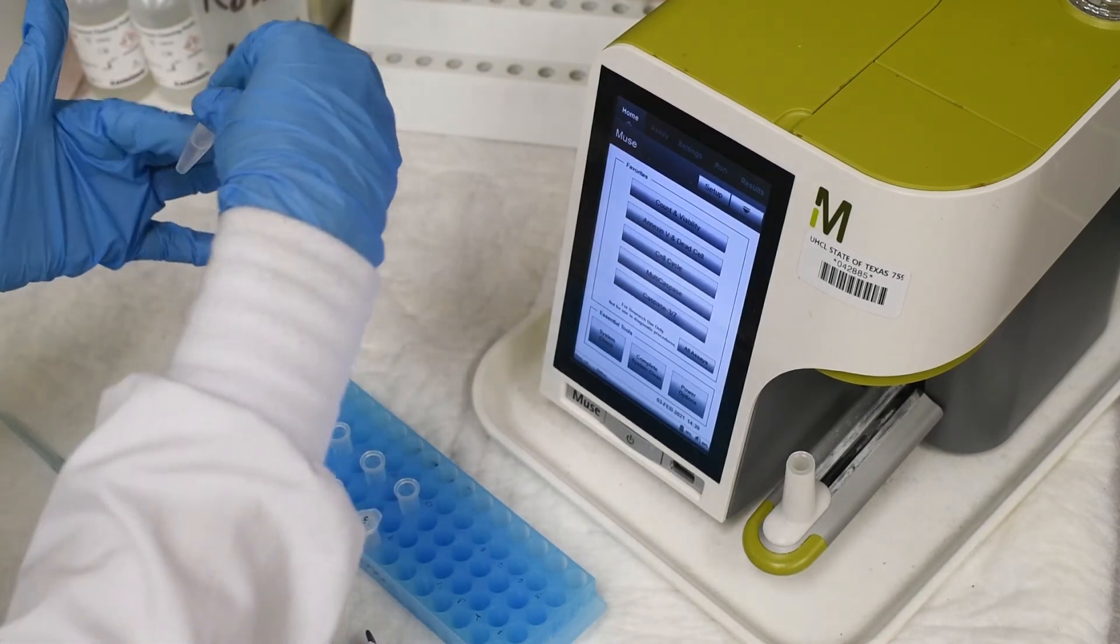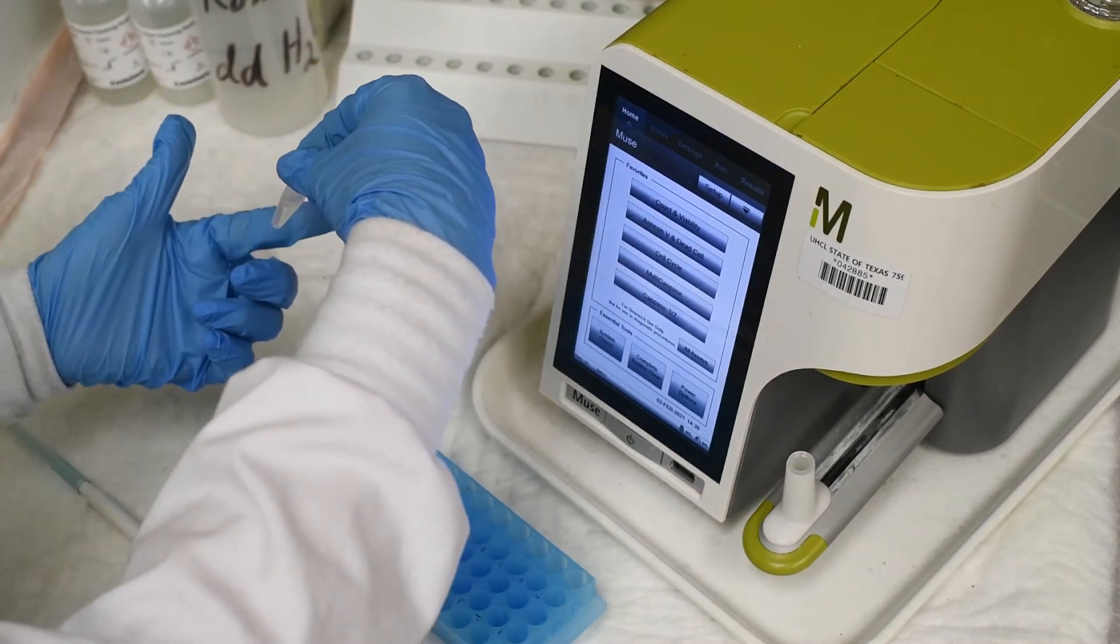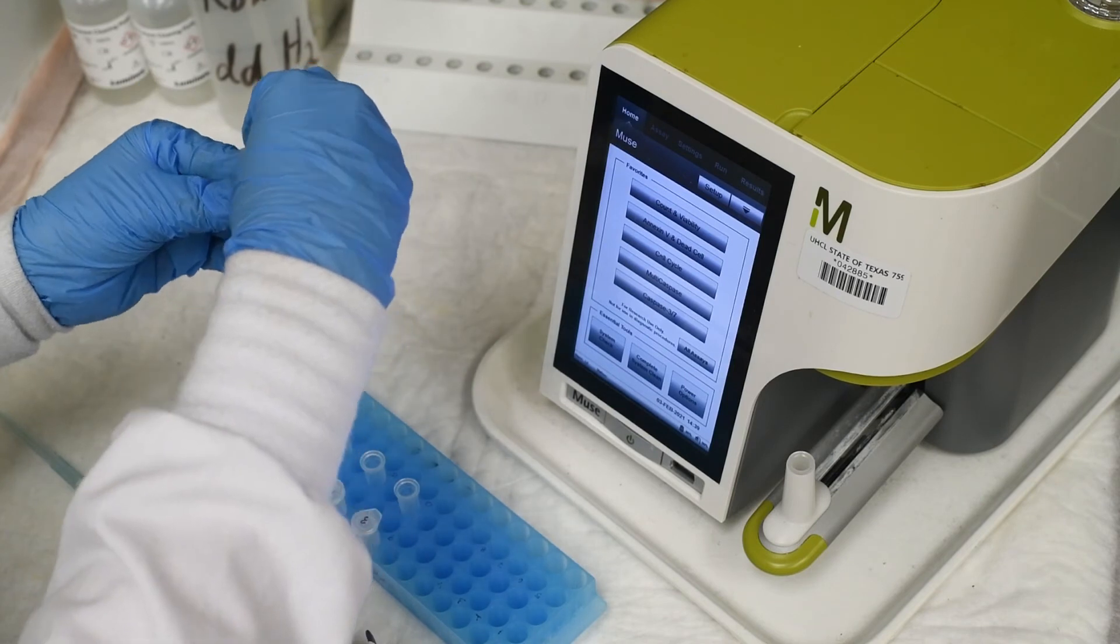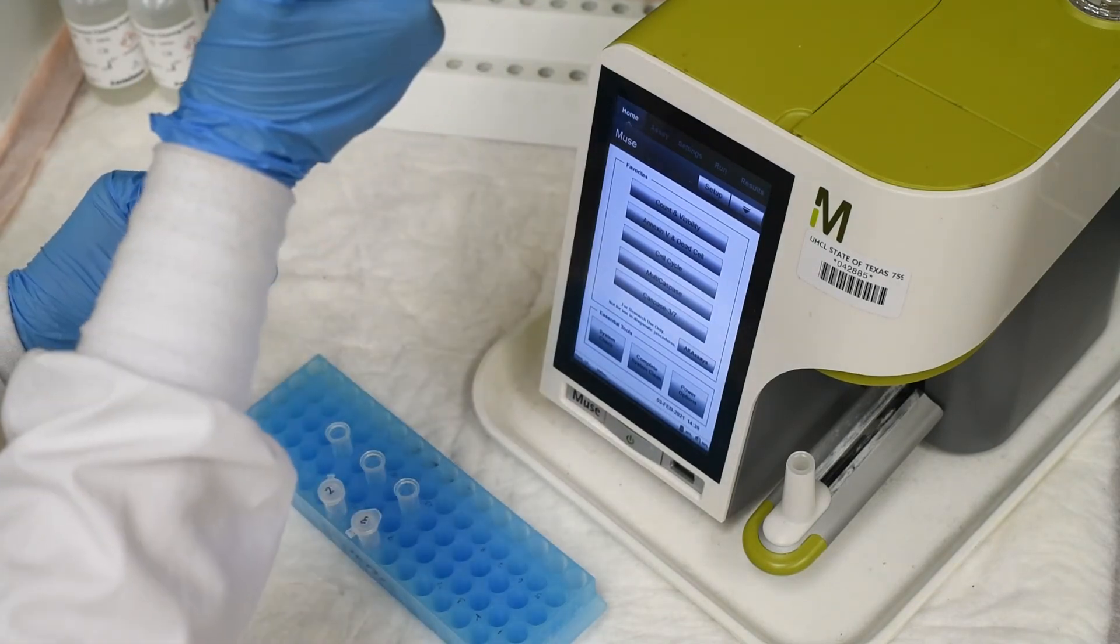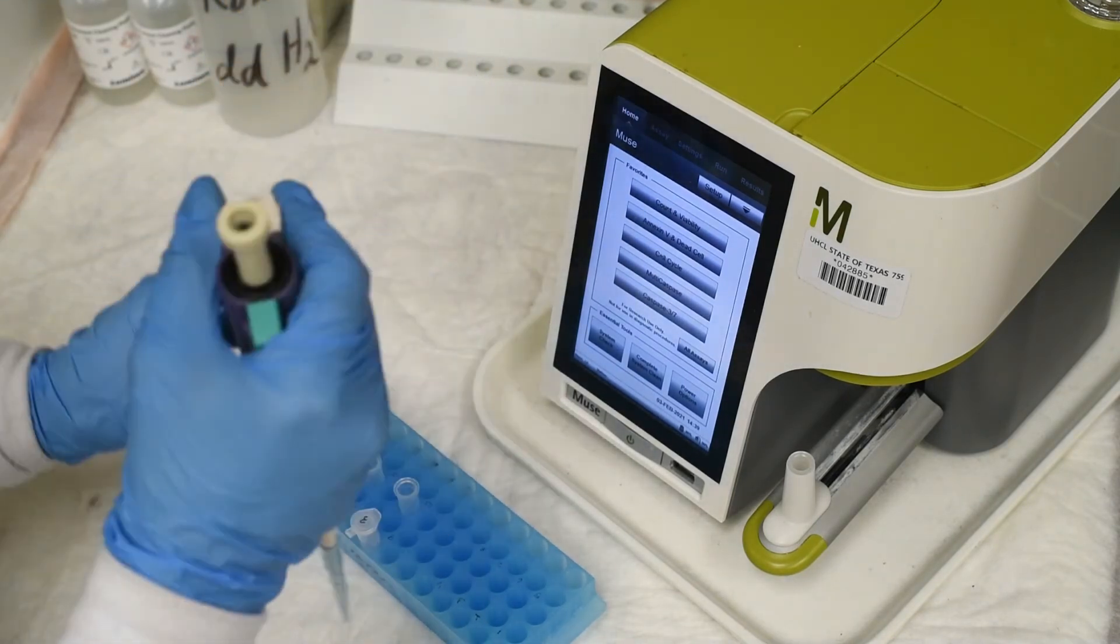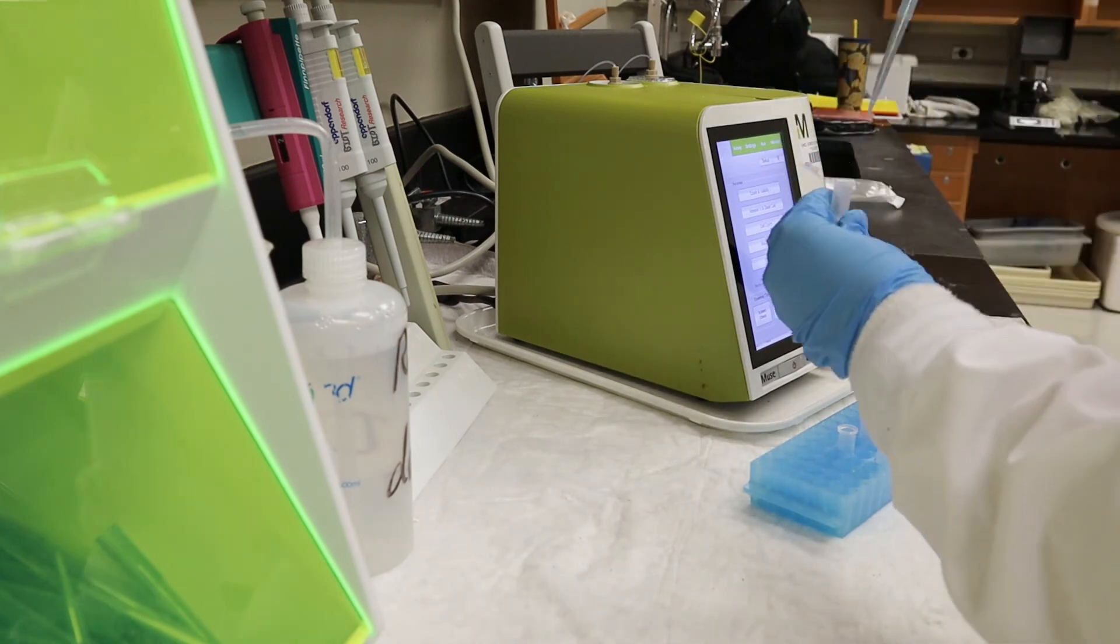Once the cells have had adequate time to stain, gently finger vortex the tubes. Using a pipette, transfer the mixture from each tube to a new 2-milliliter tube.